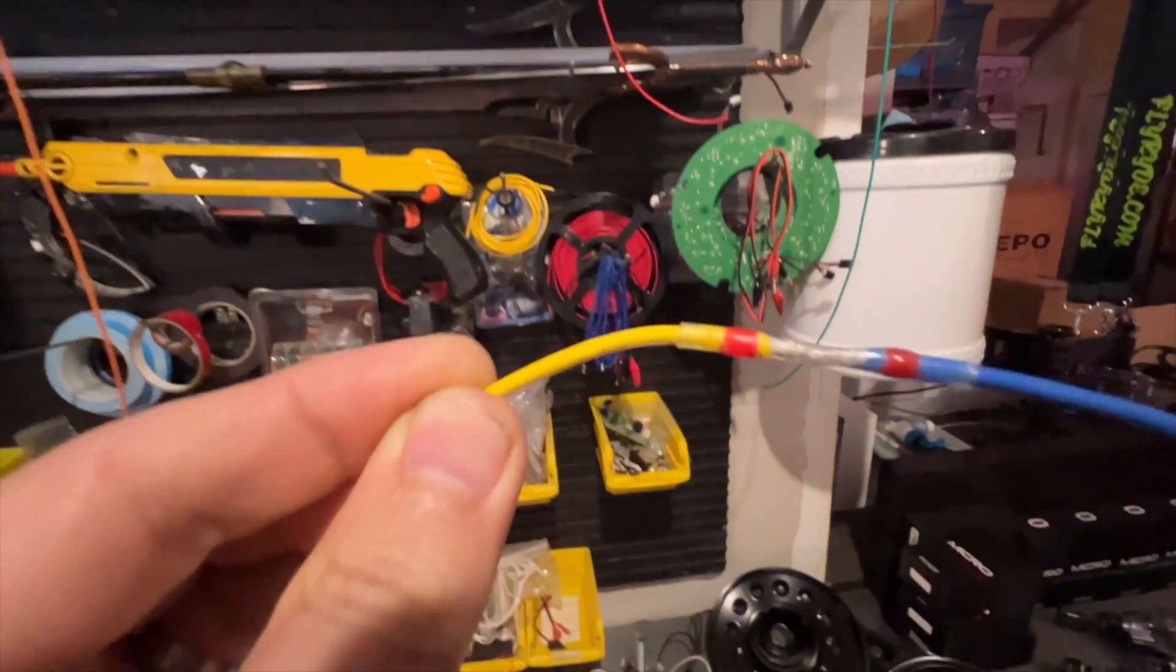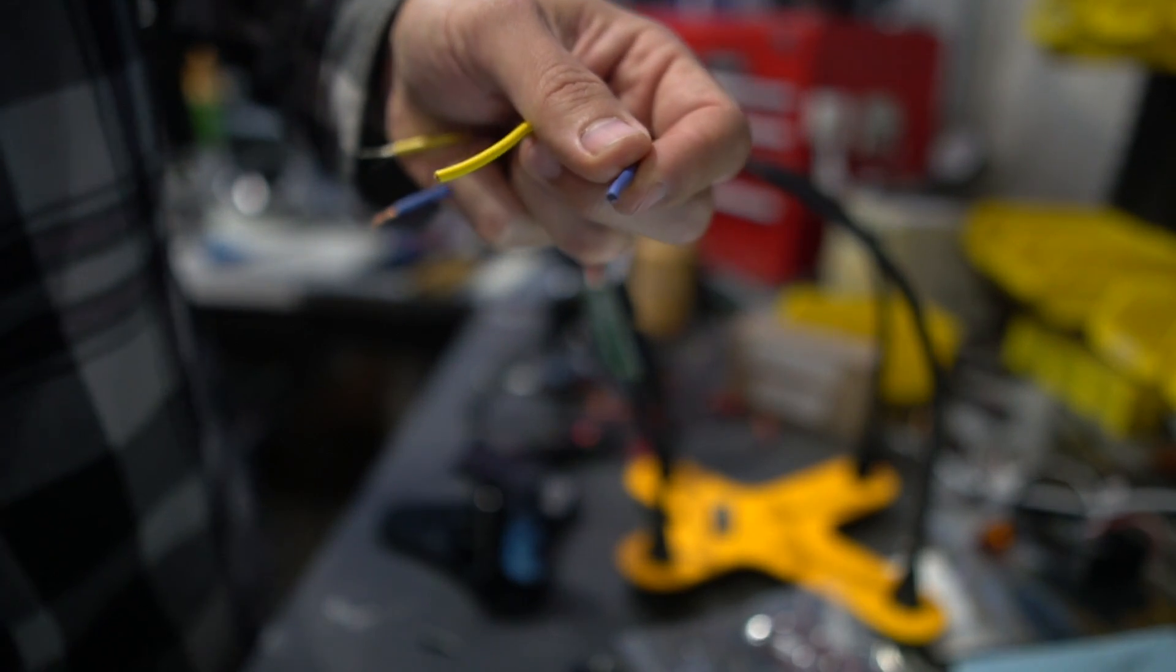This is a quick how-to to make a self-soldering butt splice. I'm going to show you a really quick and easy way to connect two wires together.